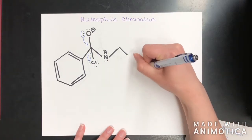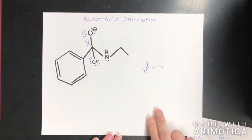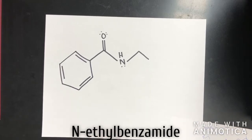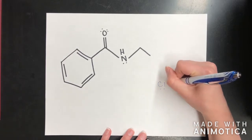The ethanamine from the previous step becomes an ethanaminium. The final product is N-ethylbenzamide. The chlorine group becomes a chloride anion.